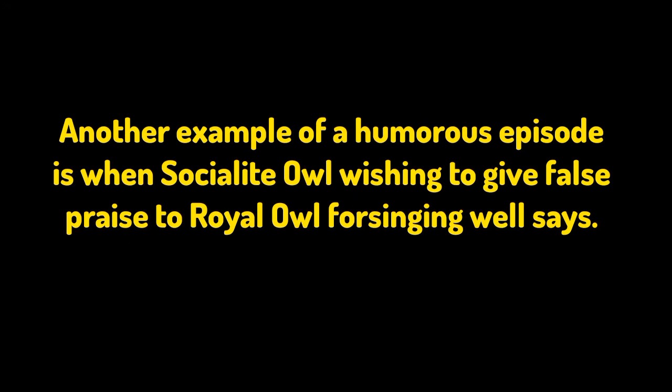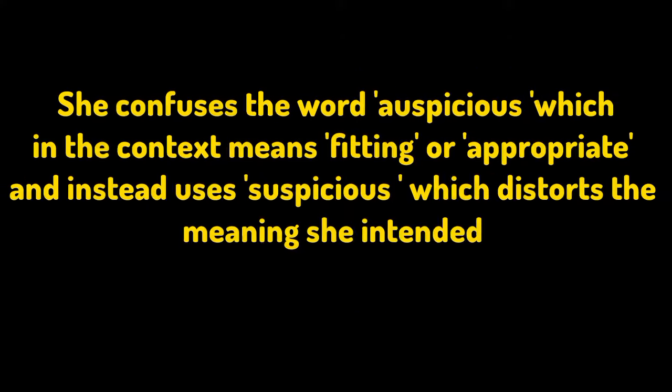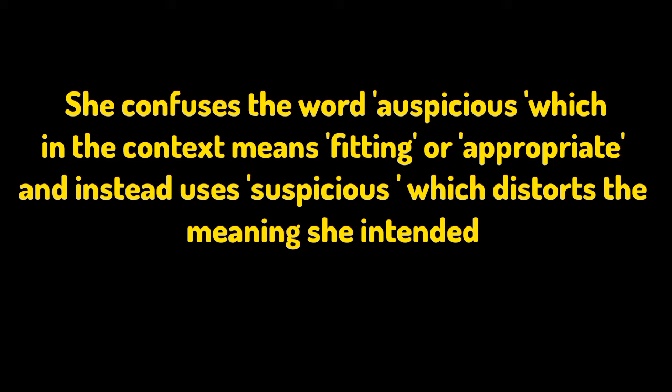Another example of a humorous episode is when Socialite Owl, wishing to give false praise to Royal Owl for singing well, says: 'Your voice is smooth and sweet. It brings nostalgia on this suspicious occasion, your majesty.' This is quite farcical as she uses the wrong word, 'suspicious,' instead of 'auspicious.' She confuses the word auspicious, which in context means fitting or appropriate, and instead uses suspicious, which distorts the meaning she intended.